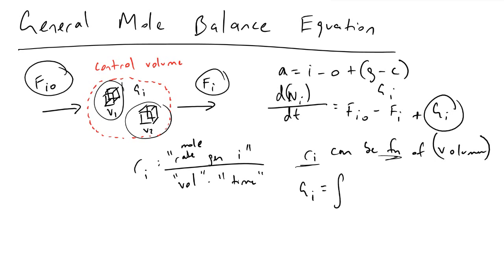To account for this, g sub i equals the integral from zero to the total volume of your reactor, V, of r sub i times dV. If you're fortunate enough to be working in reactors where the rate of reaction does not depend on where you are inside the reactor, you can pull this term out and let g sub i simply equal r sub i times the total volume. But keeping things as generic as possible, this is typically what our g sub i term equals.